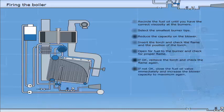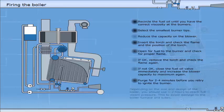If not okay, close the fuel oil valve immediately and increase the blower capacity to maximum again. Purge for 2 to 4 minutes before you retry to ignite the burner. Depending on the size and design of the boiler, you should use 1 to 2 hours to reach full steam pressure. This is to avoid damage to the boiler furnace and tubes.